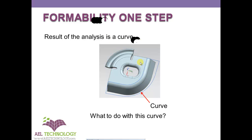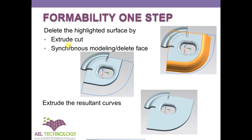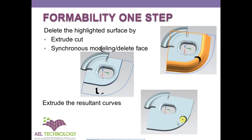So what do you do with this curve? This is one limitation of progressive die. Once you get this curve, you need to remove the existing feature — you can do this by extrude cut, or by going to Home, then Synchronous Modeling, and using Delete Face. Once it's removed, using the resultant curves produced after the analysis, you can use that contour to produce an extrude that matches the target region. This is how we create a complex unforming.